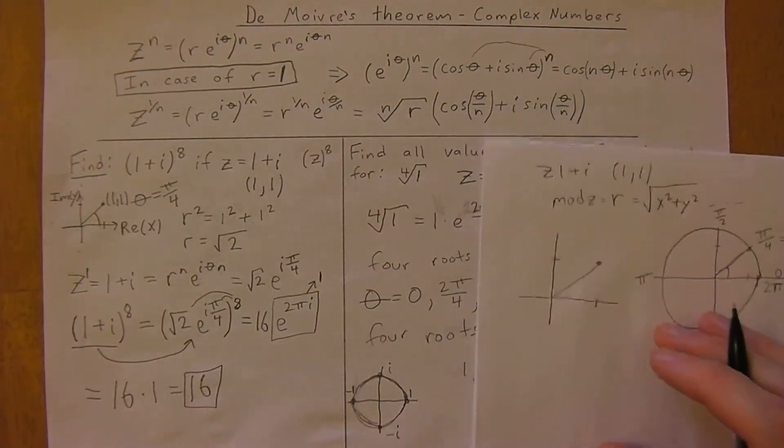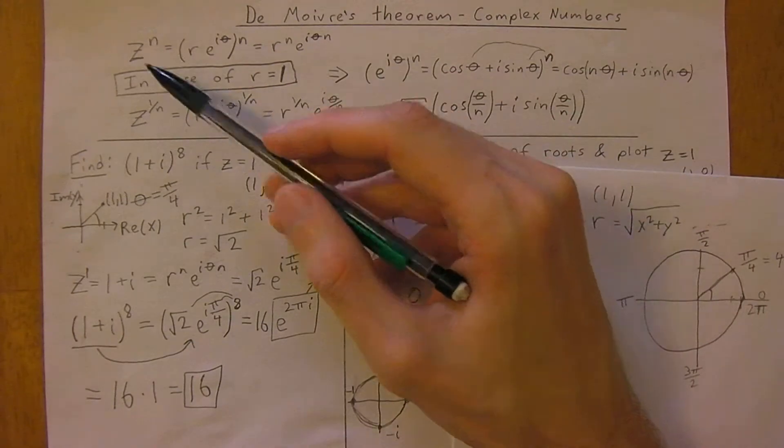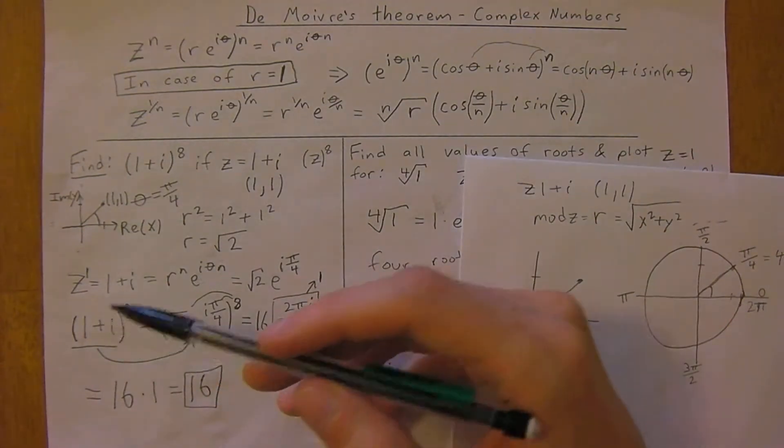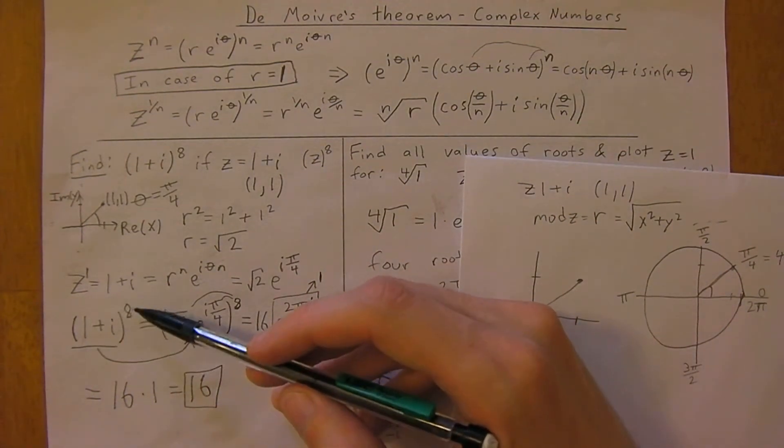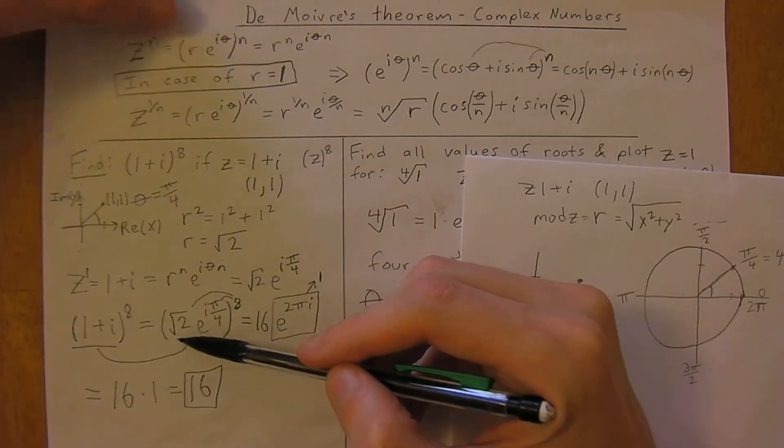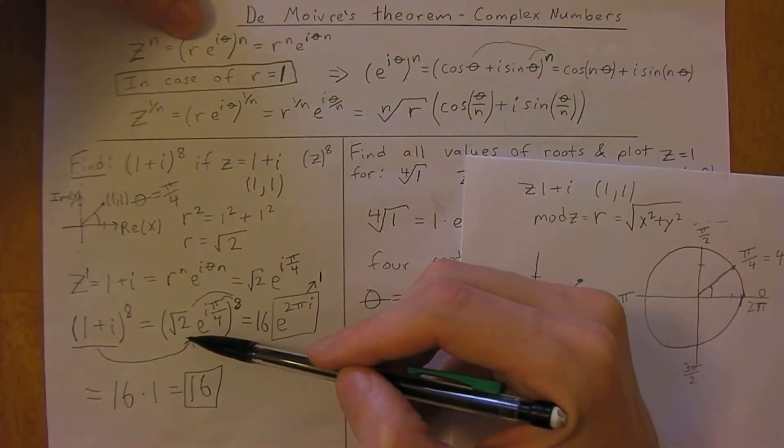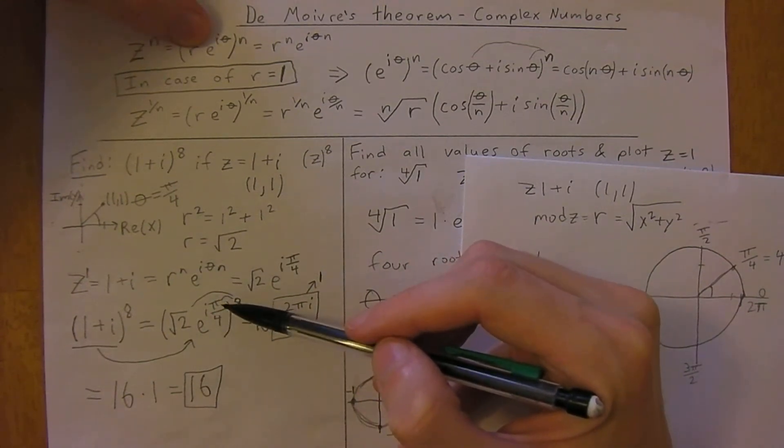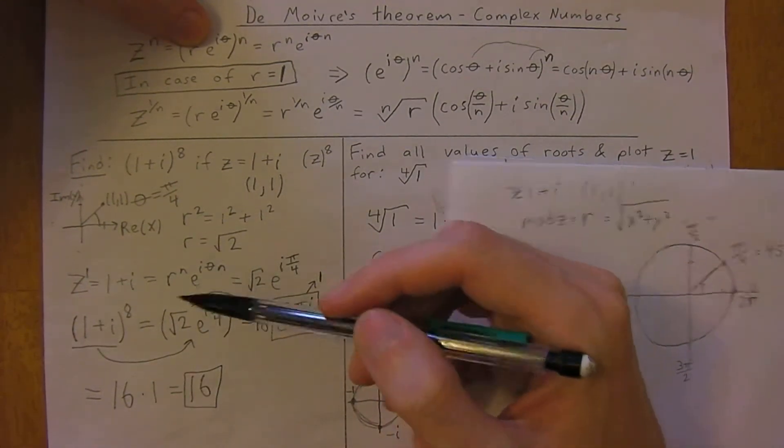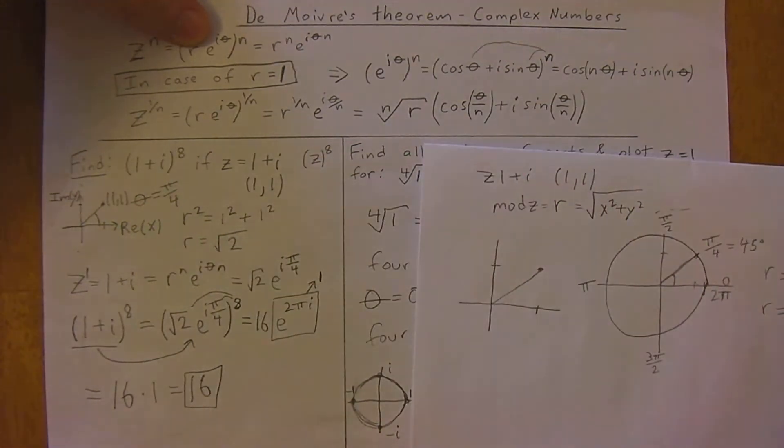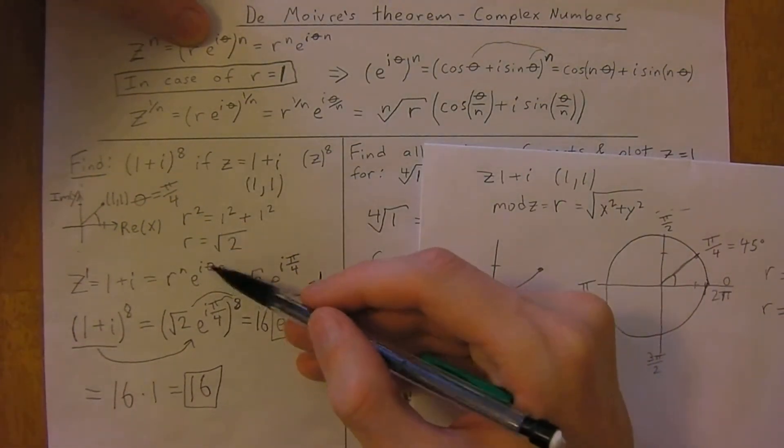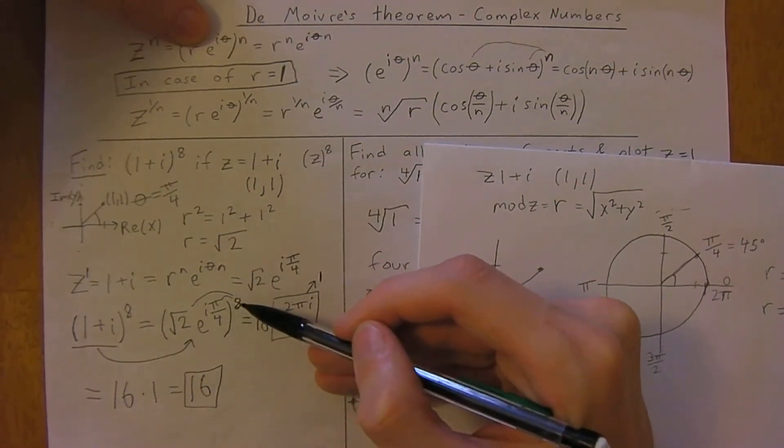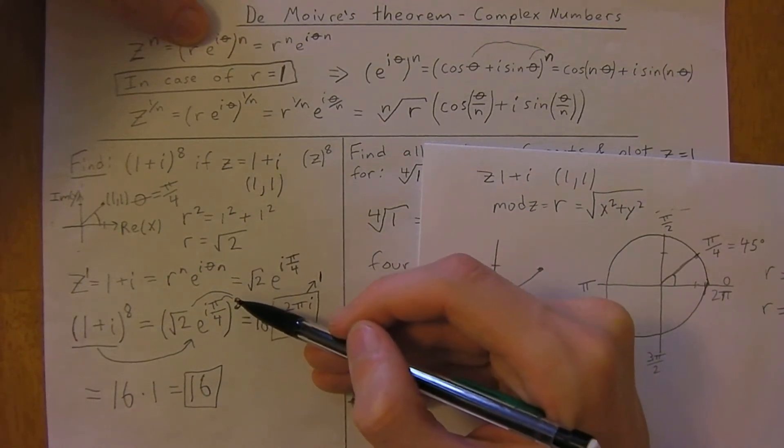Now we can start working with these equations. We have z to the eighth, so we can represent that as our radius r times e to the i theta. Remember that theta, because it's a 45 degree angle, is pi divided by 4. So i theta is pi over 4, then all of that is to the eighth power.